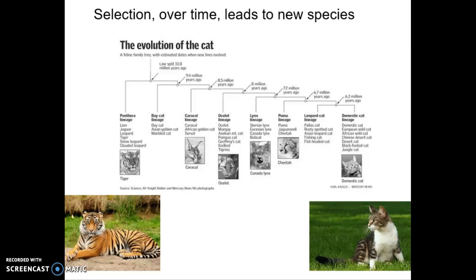Over hundreds of millions of years, certain features were adaptable as different lineages broke off, giving us the diversity of cats we have today. They've gone through selection and the five agents of evolutionary change, causing those species to evolve and new species to appear. This creates the diversity of life on Earth as we know it today.